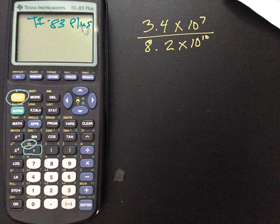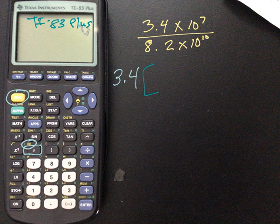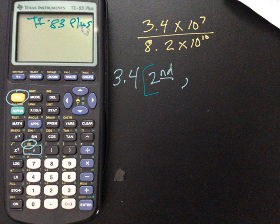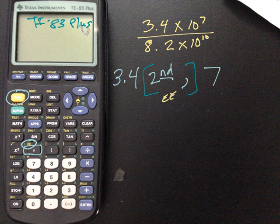All right. So same idea. We're going to take 3.4 and then we're going to type in second and then we're going to hit the comma because that gives us the EE. And then my exponent is seven. Okay. So that we'll type in and that will give you 3.4 EE seven. That means 3.4 times 10 to the seventh.